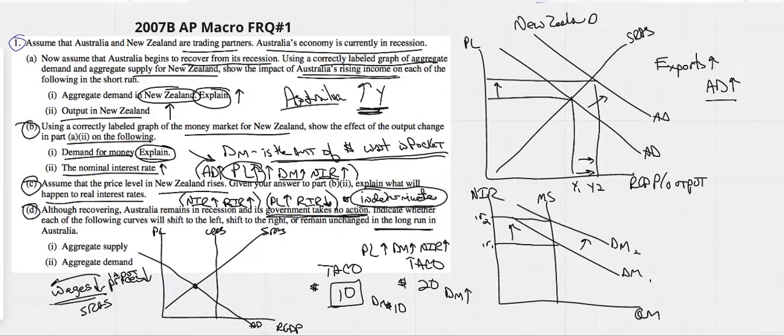If wages go down, how does that affect your short-run aggregate supply curve? If cost of businesses go down or input costs go down, we're going to create more stuff. As costs go down, our short-run aggregate supply curve would shift to the right. And this would take us back to full employment.